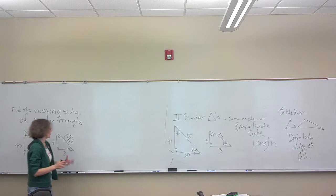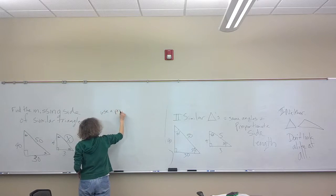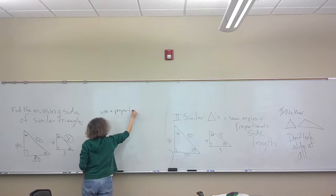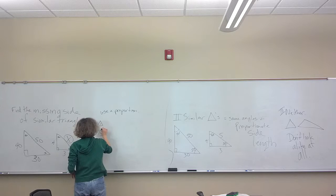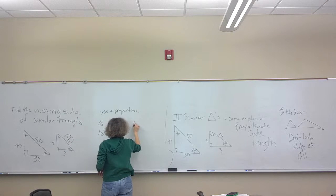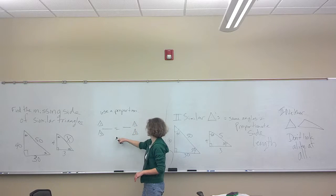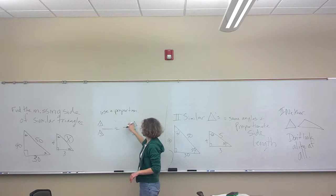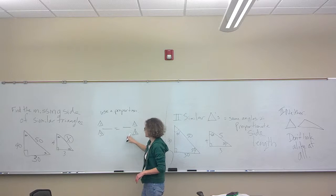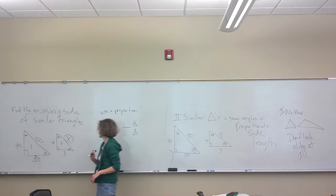So we're going to find it with proportions. The important thing with proportions is, just like when we did the betting problem, how much you win would be on top and all the bets that you put up was on bottom. In this case, we have all the triangle 1 values on top and all the triangle 2 values on bottom.